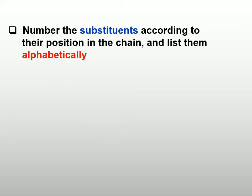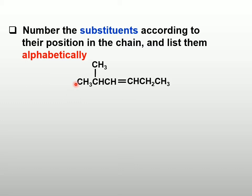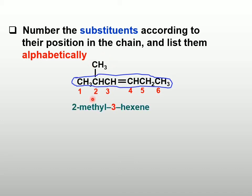Next, we are going to number the substituents according to their position in the chain and list them alphabetically. My parent is a 6-carbon chain and the numbering starts from the left, giving carbon 1, 2, 3, 4, 5, 6. So my parent will be 3-hexene and there is a branch at my second carbon. So it will be 2-methyl-3-hexene.